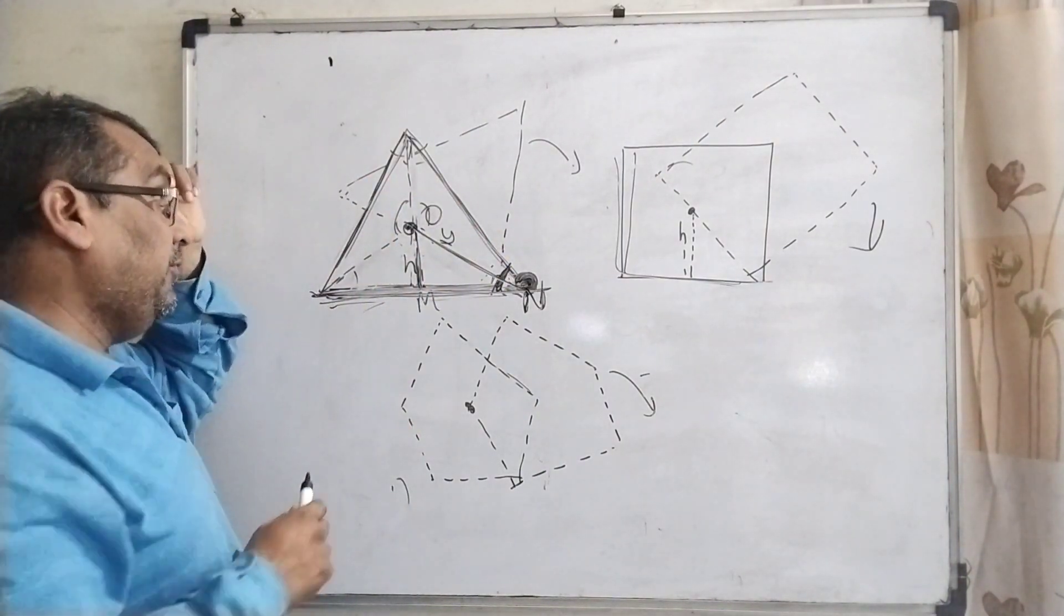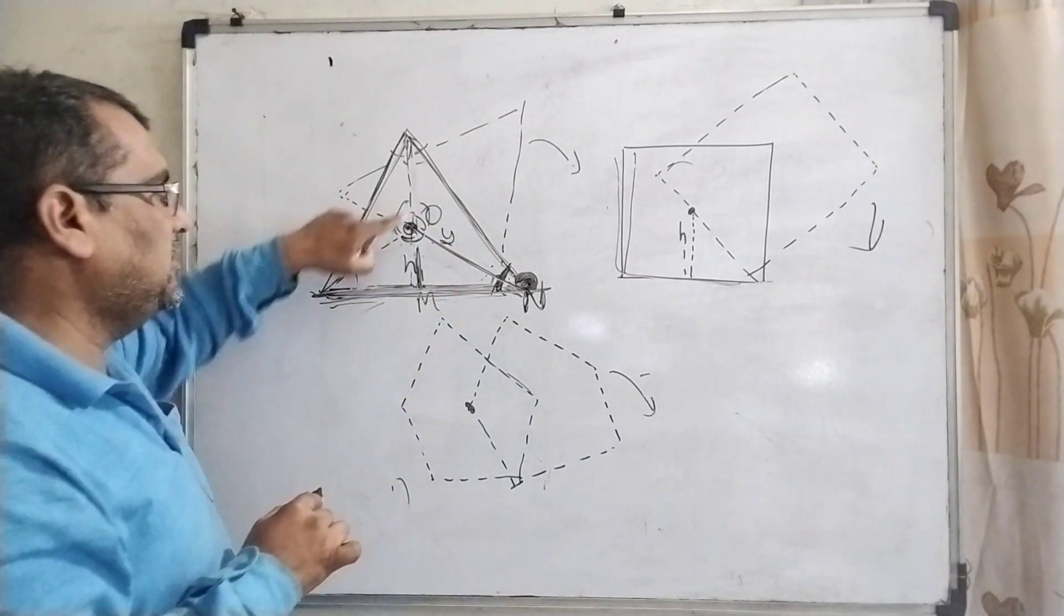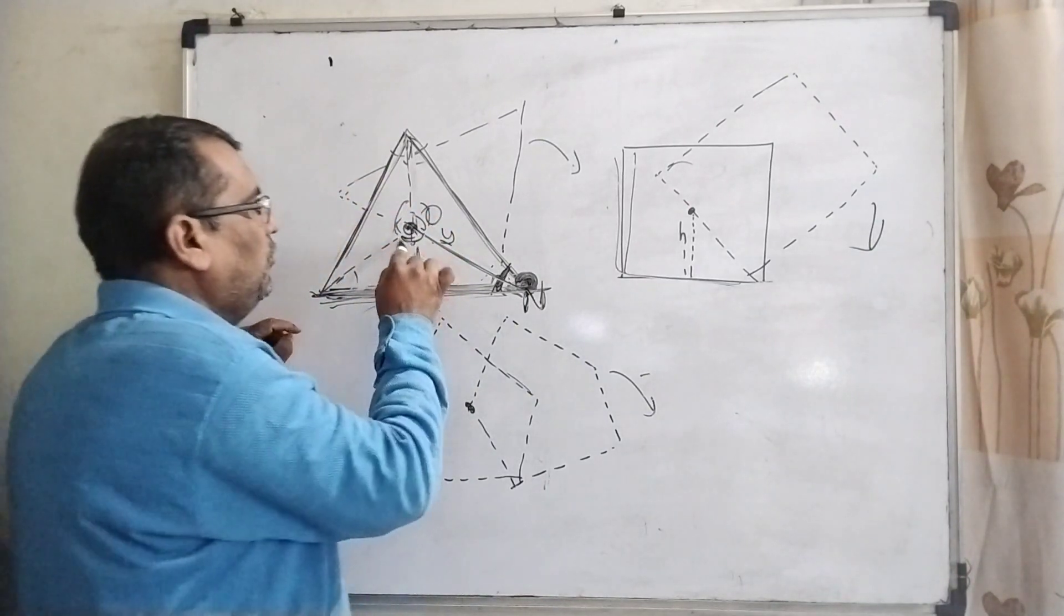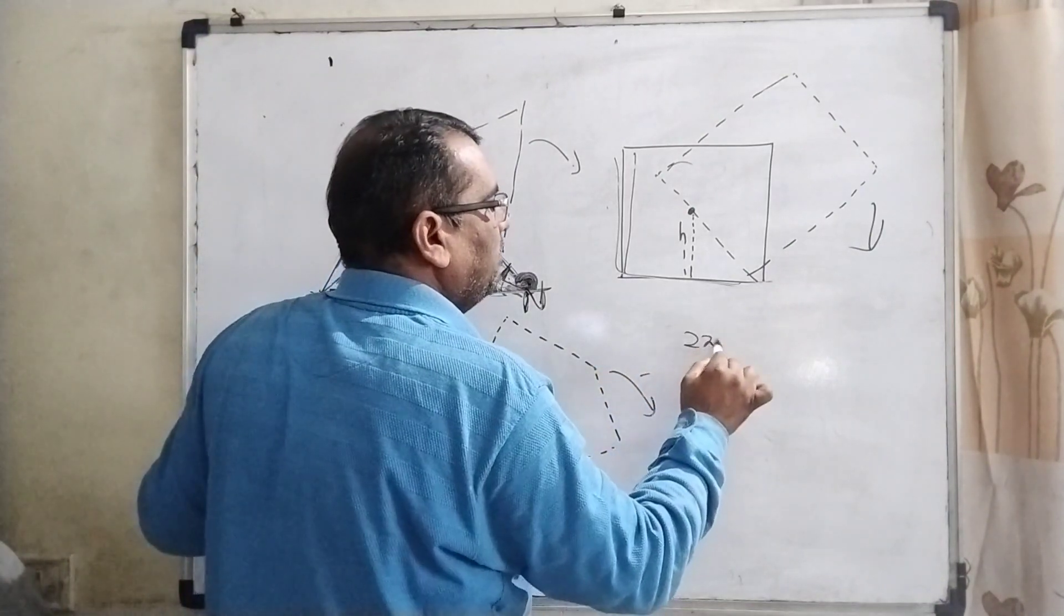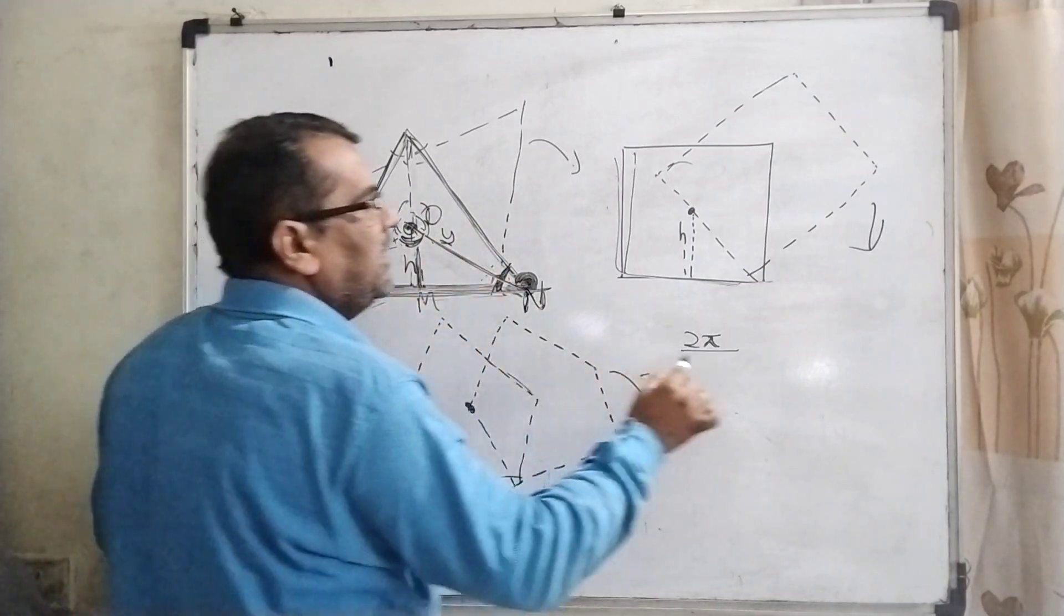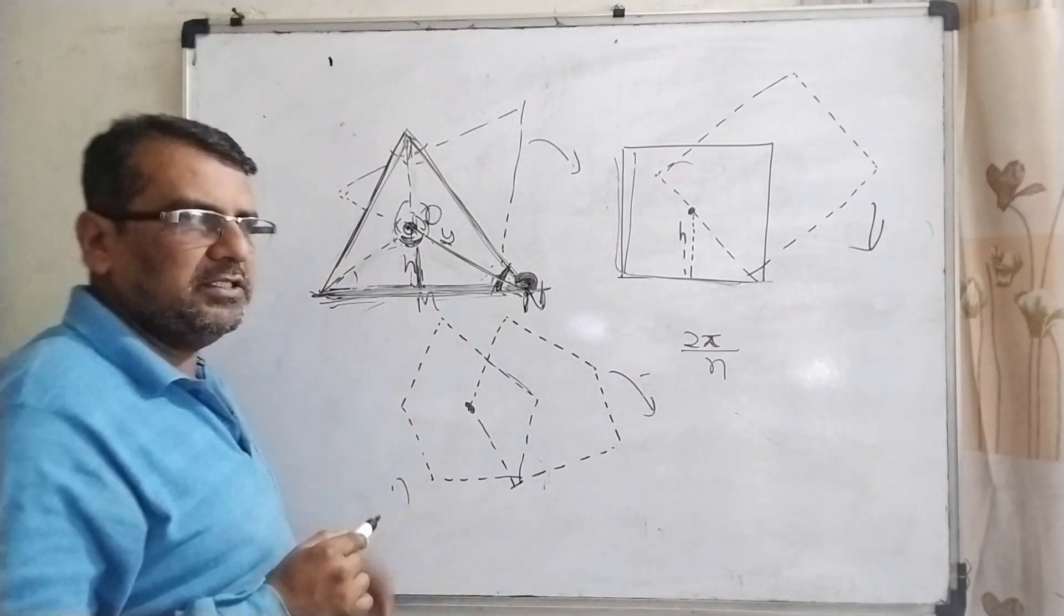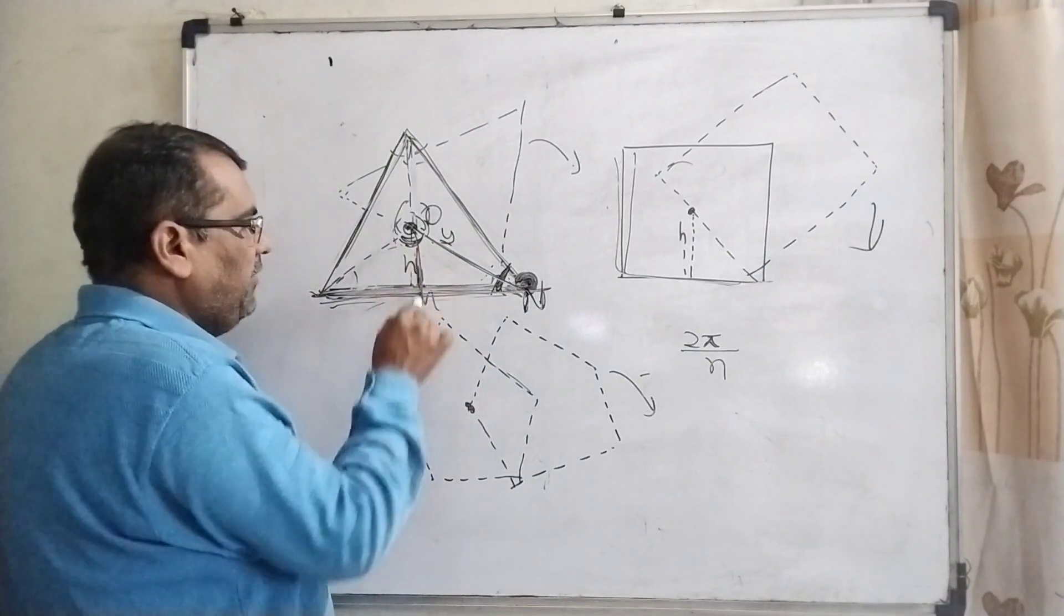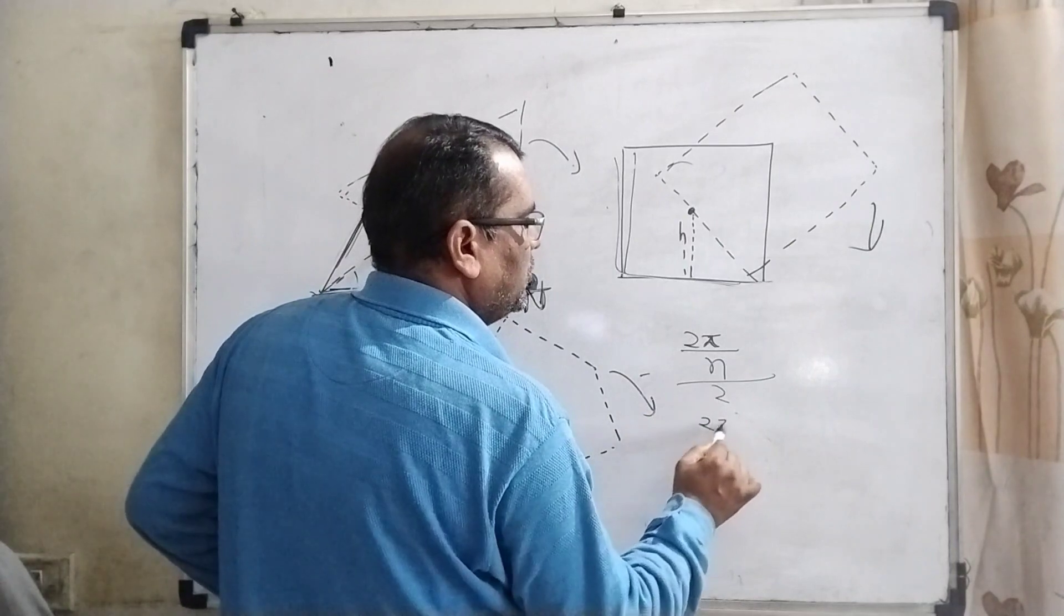First we have to find out the angle of these centers. As you know that this is the polygon, so what is the angle? Now total sum of the angles is 360, means 2π, upon sides - three sides here, 4 sides, 5 sides. So therefore we can consider n sides, divided by 2 because it is in equal position, then 2π/2n. That is each angle from this side - this side is π/n.